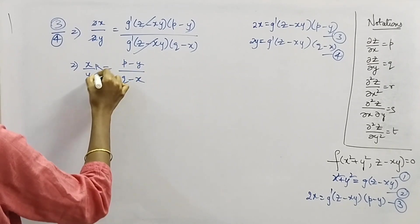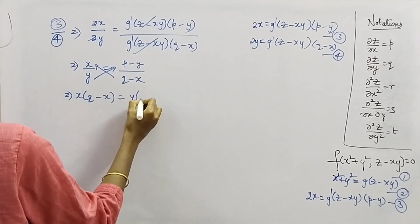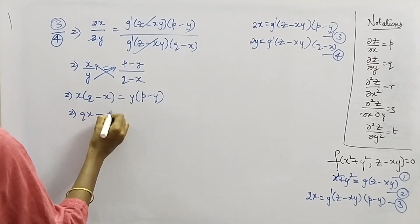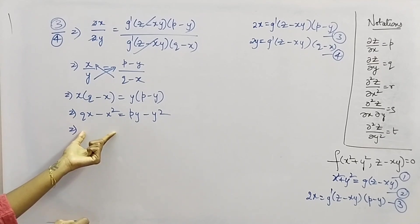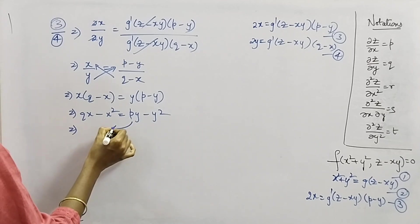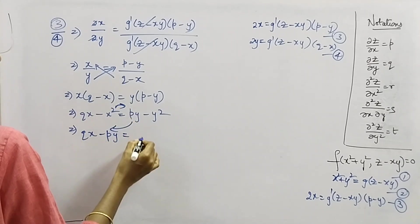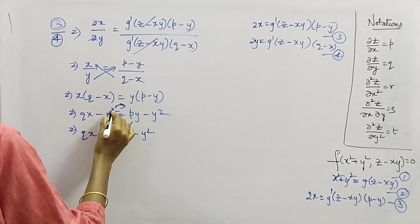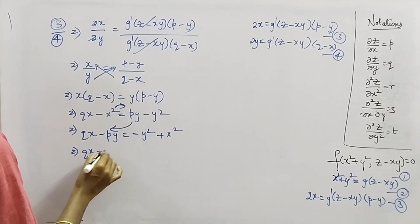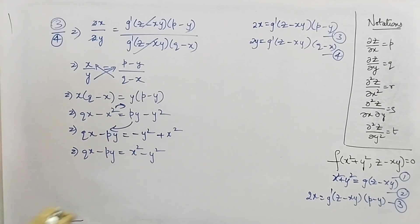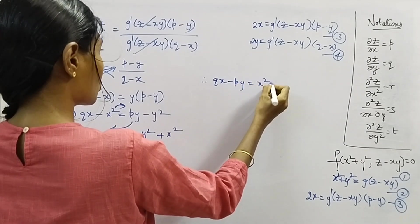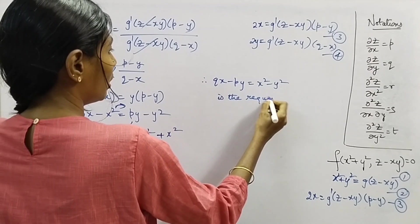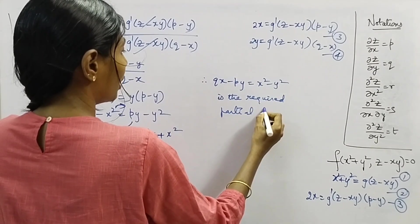Cross-multiplying: x(q − x) = y(p − y), which gives qx − x² = py − y². Bringing p and q terms to the left and the remaining terms to the right: qx − py = x² − y². Therefore, qx − py = x² − y² is the required partial differential equation.